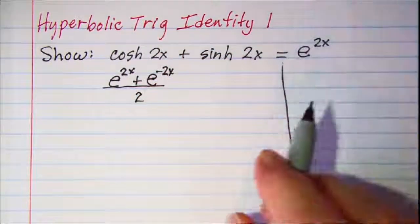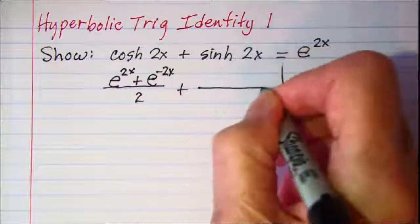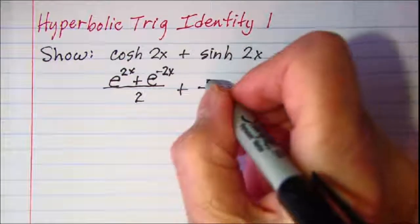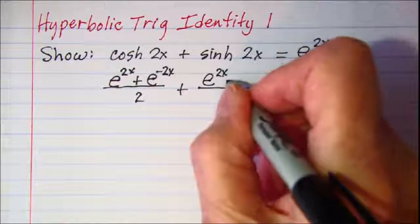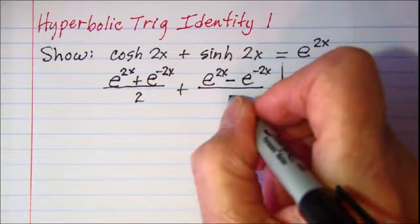Then by definition, my hyperbolic sine of 2x is equal to e to the 2x minus e to the negative 2x divided by 2.